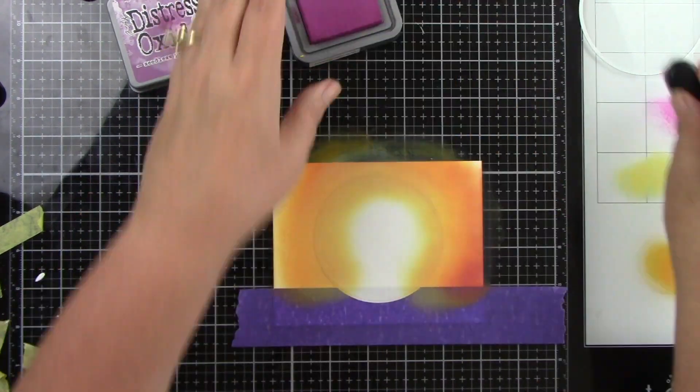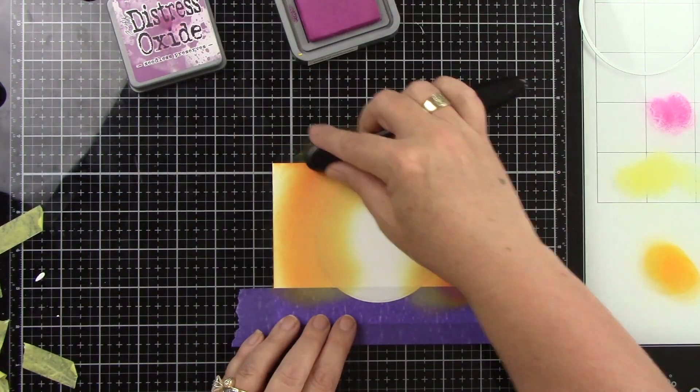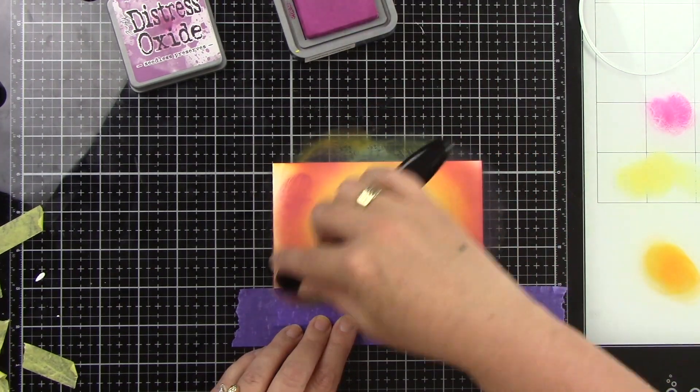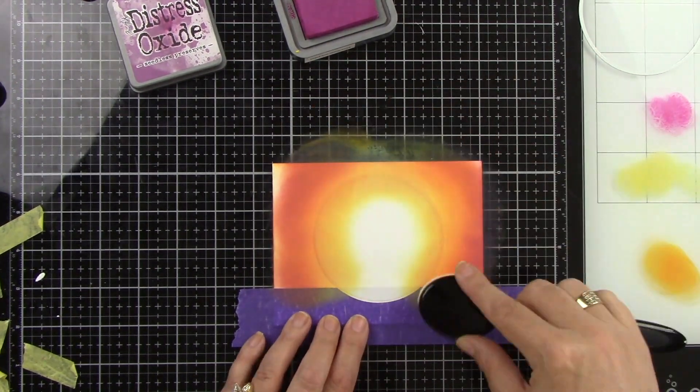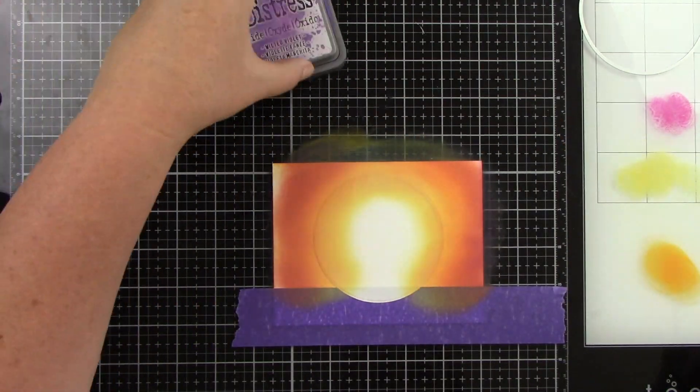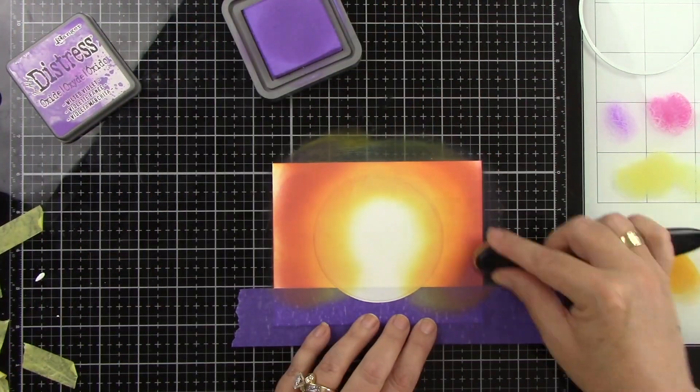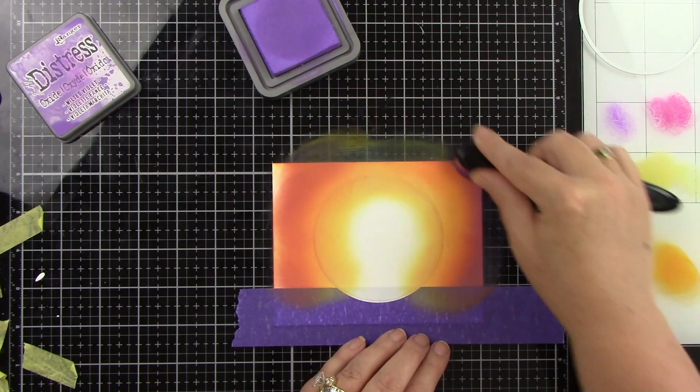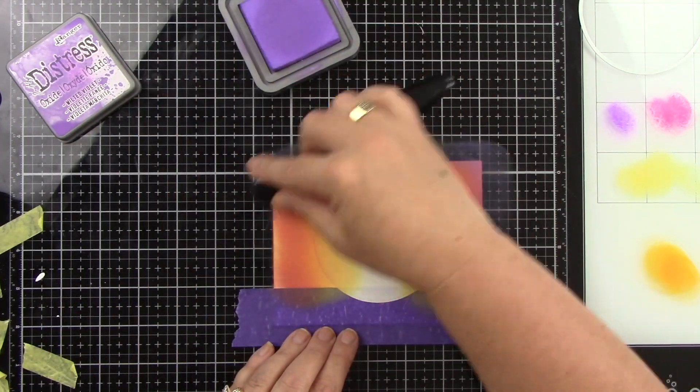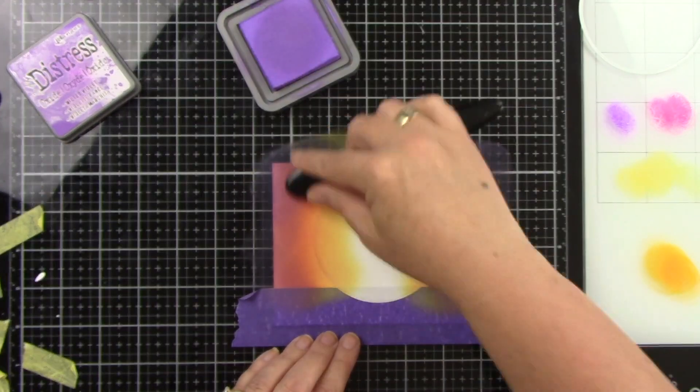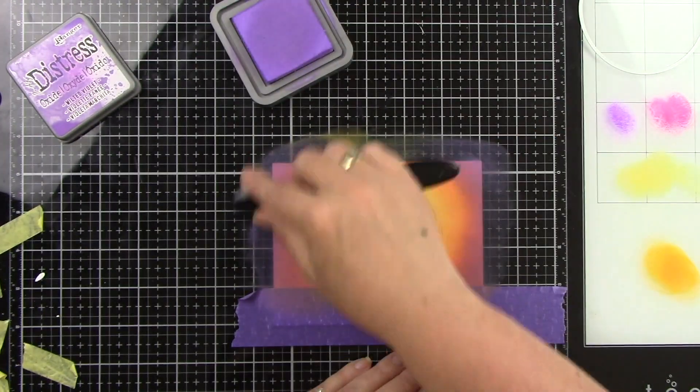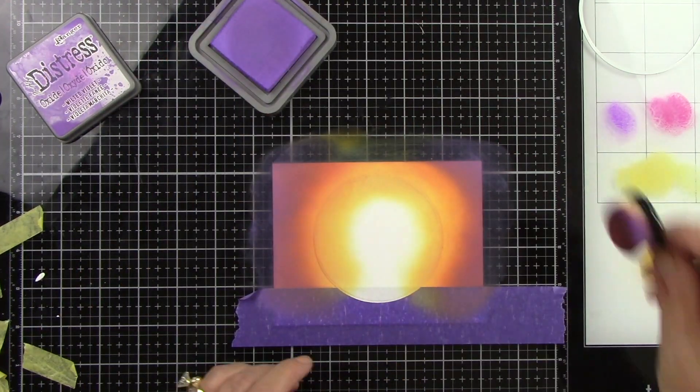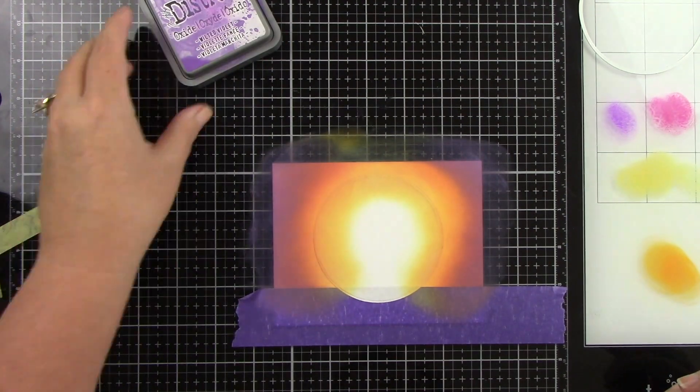Then I'm going to come in with some seedless preserves. I like this because it really has a red tint to it, so next to that orange it blends really well. Then I'm going to come in with wilted violet and I'm just working out to the side, just adding a little bit of color as I go along.